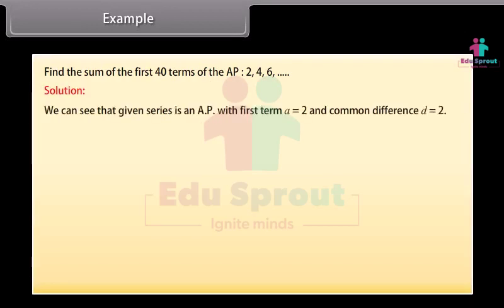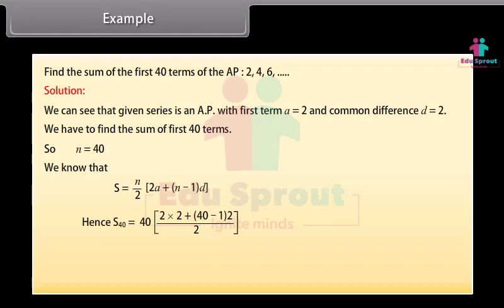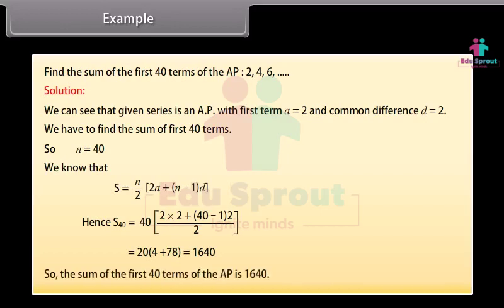We can see that the given series is an AP with first term A equal to 2 and common difference D equal to 2. We have to find the sum of first 40 terms, so N is equal to 40. We know that S is equal to N upon 2 into (2A plus (N minus 1) into D). Hence S40 is equal to 40 divided by 2 into (2 into 2 plus (40 minus 1) into 2), which is equal to 1640. So the sum of the first 40 terms of the AP is 1640.